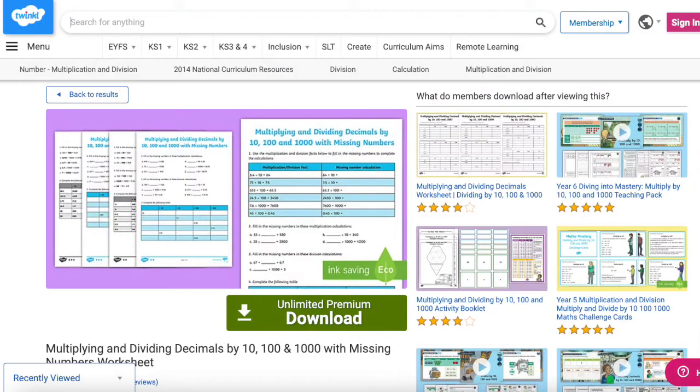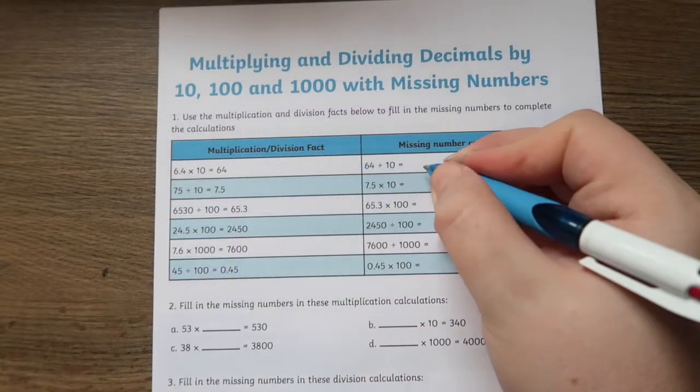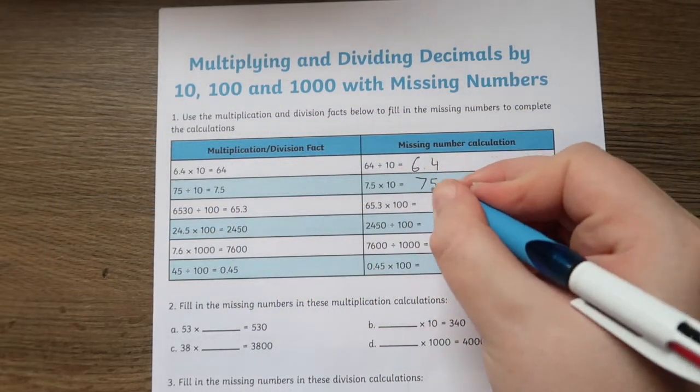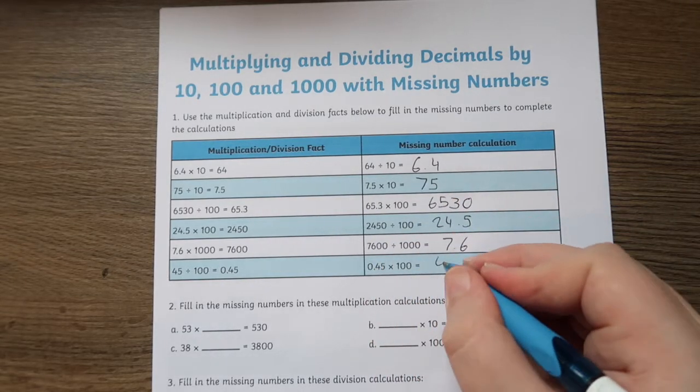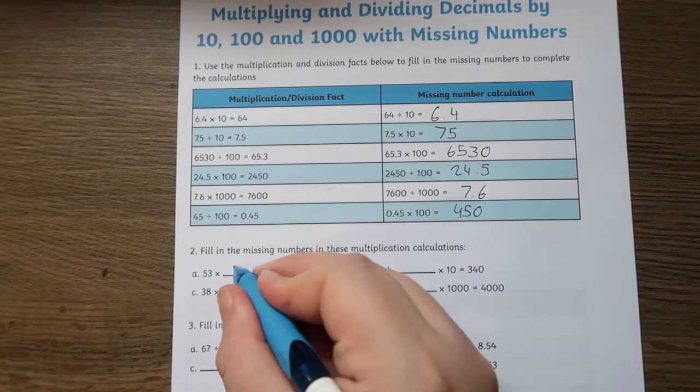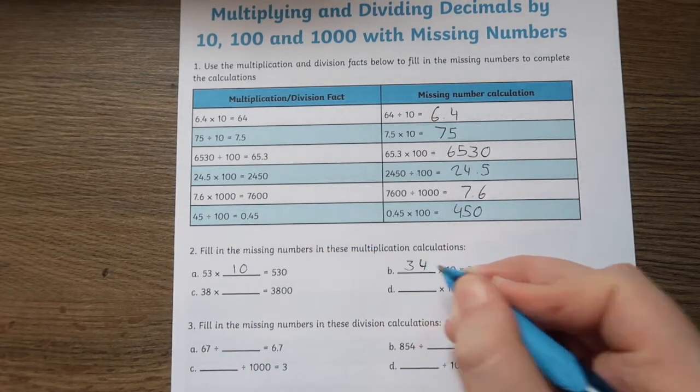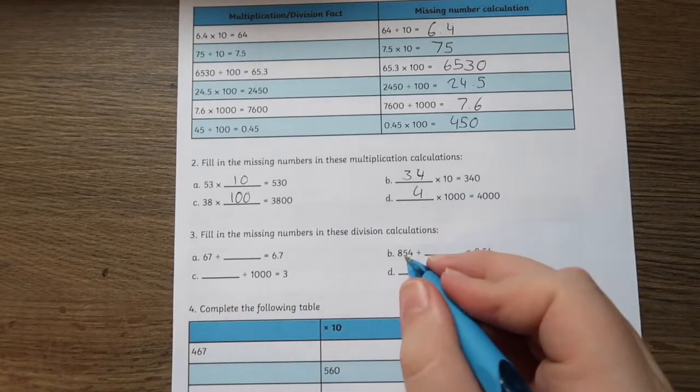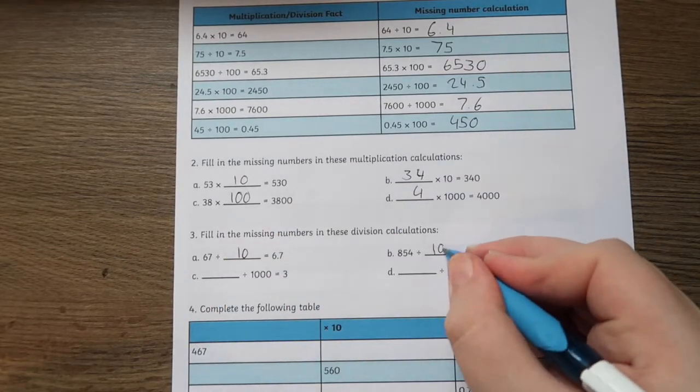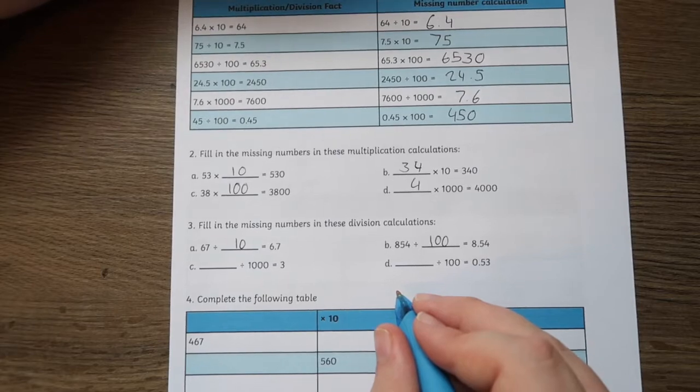The Multiplying and Dividing Decimals by 10, 100 and 1000 with Missing Numbers Worksheet is a great resource to help children further develop their understanding. This differentiated worksheet is ideal to help year 6 students learning to multiply and divide numbers including decimals by 10, 100 and 1000 by using the inverse to find the missing numbers.